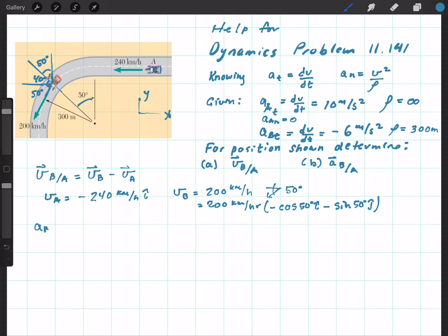Similarly, with the acceleration of B with respect to A, the acceleration of B minus the acceleration of A, and we need to just go through the same process and write these out as vectors in i's, j's, and k's using the information we were given.